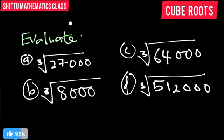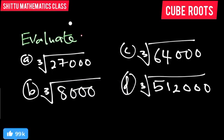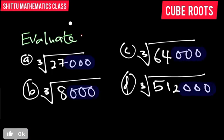Now listen attentively so that you'll be able to get what I'm doing. In the last video, I made you understand that whenever you have two zeros at the back and you are looking for the square root, that means 100. So now here we have three zeros — three zeros there, three zeros there, three zeros there. What we are going to do is split them: 27 times 1,000, 8 times 1,000, 64 times 1,000, and 512 times 1,000.